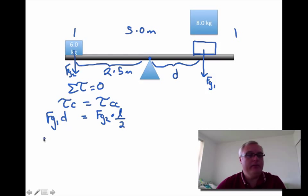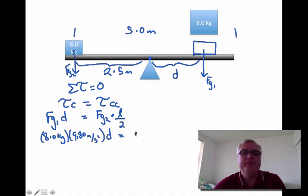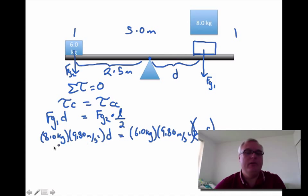Now we can start substituting in and solving for our unknown value, which is d. Our first torque is the weight of the eight kilogram block times the distance that that force acts. On the other side we have the weight of the six kilogram block, and it's acting again at 2.5 meters from the pivot point. So we've written an equation; now the only unknown is d, and what we find is it's 1.9 meters from the pivot.